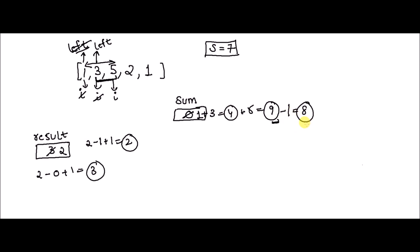If sum is less than s, we push the right pointer forward — that's how we iterate the array. Right now sum is greater than 7, so we subtract 3 from 8, giving 5, and push the left pointer forward. Now sum is less than s, so it's time to push the right pointer forward. I add 2, making sum 7. Since the problem states sum greater than or equal to s, 7 equals s means it's valid — you can see 5 and 2 is a subarray.